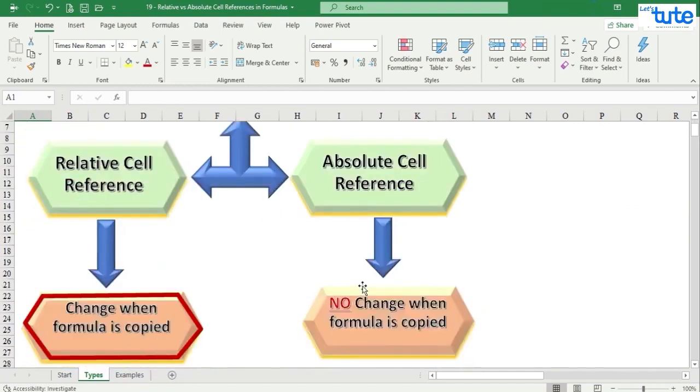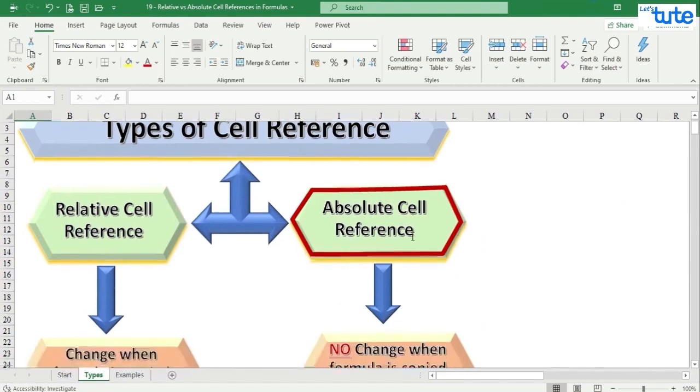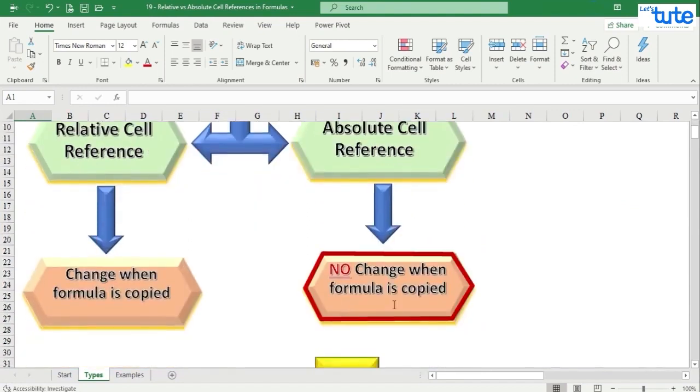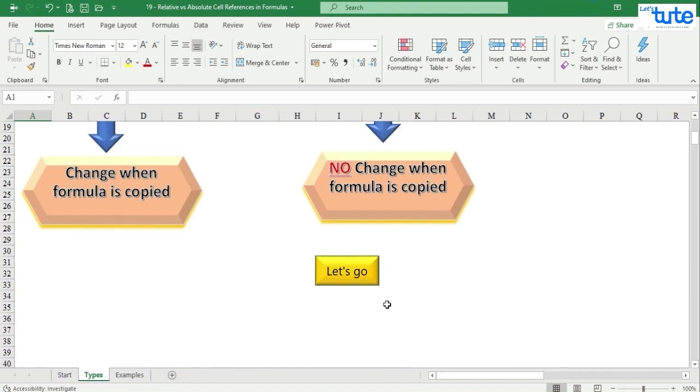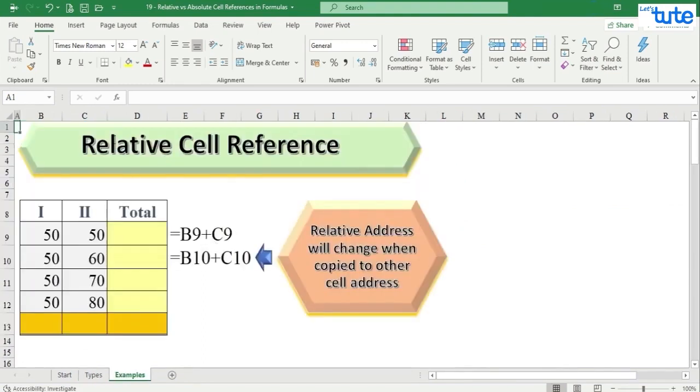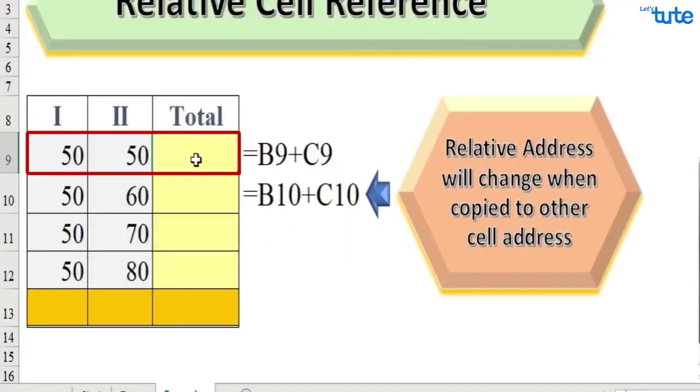Whereas in absolute cell reference, it remains fixed. So let's check it with an example to understand it very clearly. For relative cell reference, here we are inserting the formula B9 plus C9, so we got the total of 100.